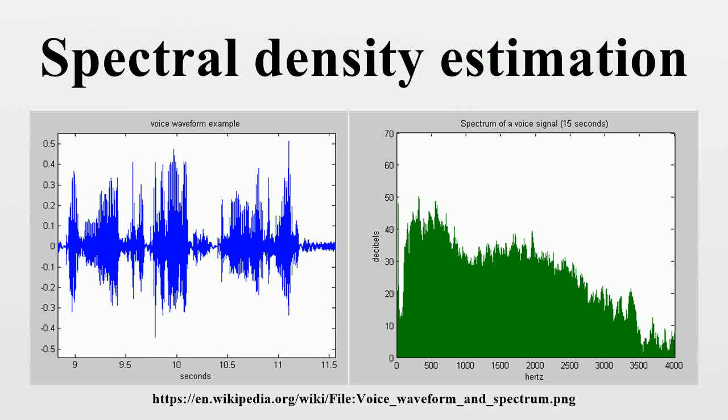In statistical signal processing, the goal of spectral density estimation is to estimate the spectral density of a random signal from a sequence of time samples of the signal.